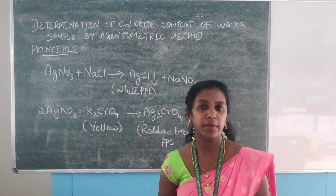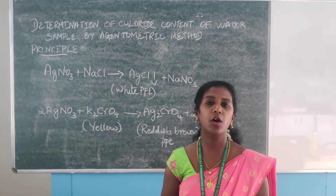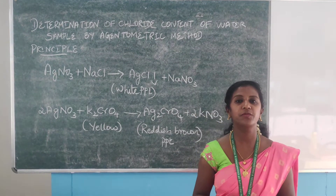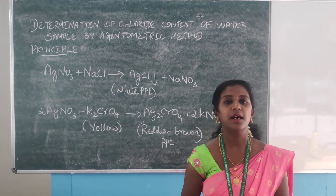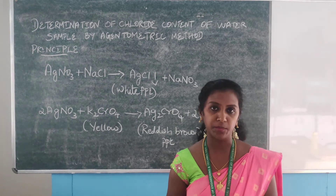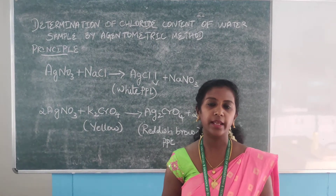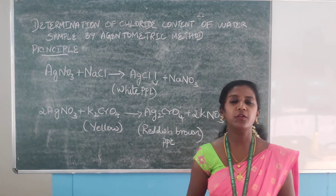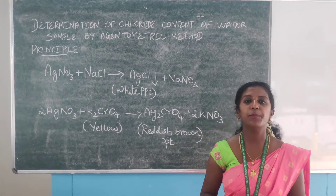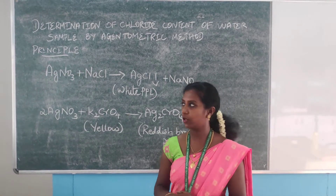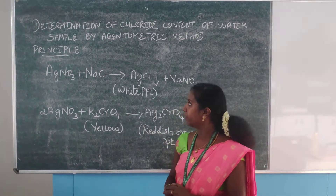In the argentometric method, we all know the other name of silver is Argentinium. So using silver nitrate, we are going to find out the percentage of chloride ions present in the water sample.